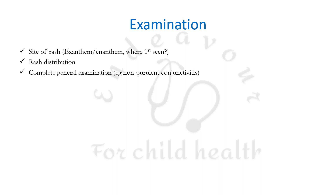A complete general examination is important. For example, non-purulent conjunctivitis is a pathognomonic feature of Kawasaki disease. Involvement of the reticuloendothelial system is seen in patients with collagen vascular disorders. These findings help us understand what category the rash belongs to.